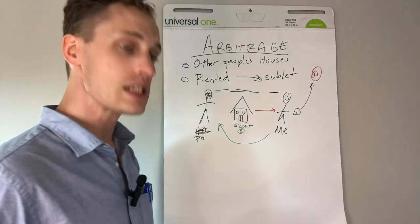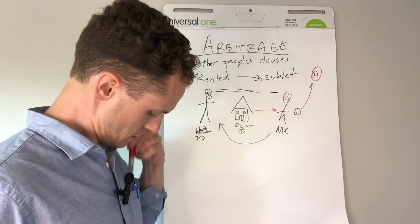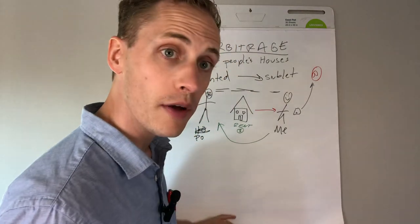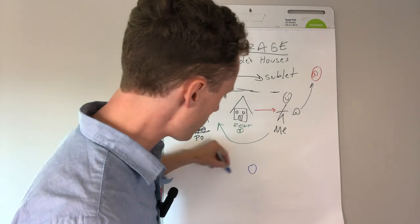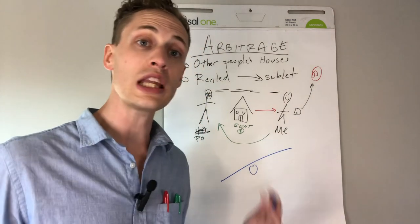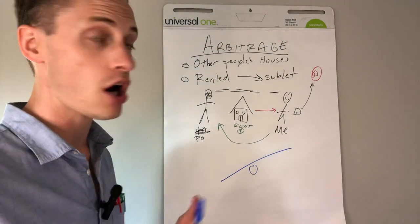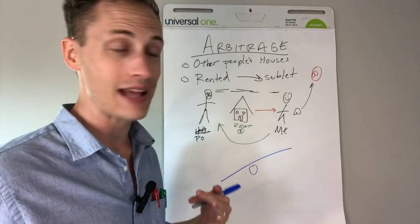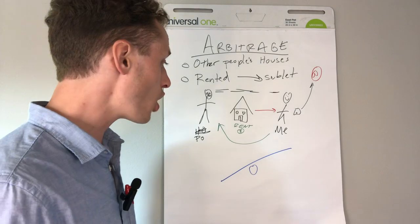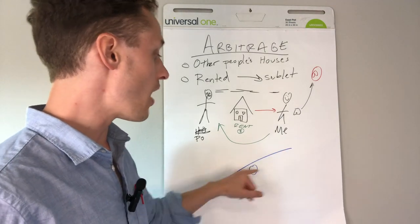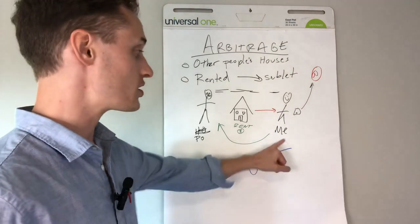So the model is you use other people's houses. What this enables you to do is leverage. You talk about leverage, right? So you need leverage when you're first getting started. I didn't have the money to buy a home. I didn't own my own home at the time. I lived with my folks. And so what I needed was the leverage of other people's assets and properties to build a business.